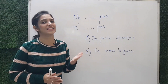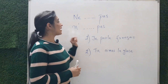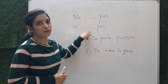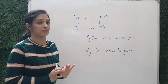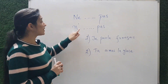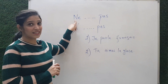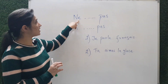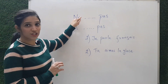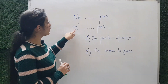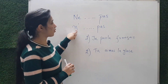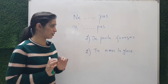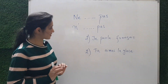Point number two: when the verb is starting with a vowel, we don't put 'ne' — we put 'n apostrophe.' The 'e' gets changed into an apostrophe, so we put 'n'' and then 'pas.' I will give you one example for better understanding.